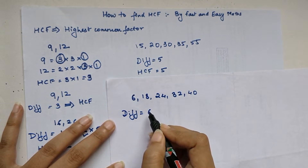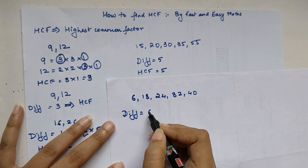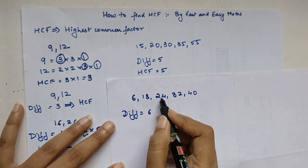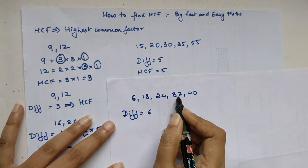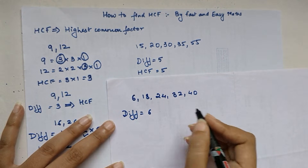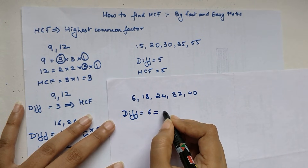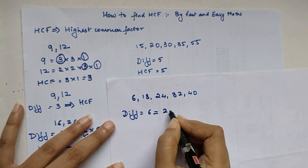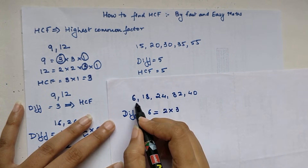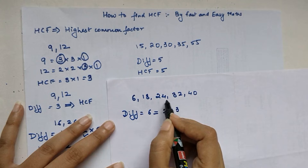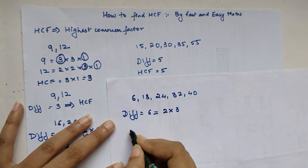Now let us check whether 6 is a factor of all these numbers. 6 is a factor of 6, 18, and 24, but is 6 a factor of 32 or 40? No. So we write 6 in terms of its prime factors: 2 × 3. Checking 2 — yes, 2 is a factor of 6, 18, 24, 32, and 40. So my HCF here is 2.